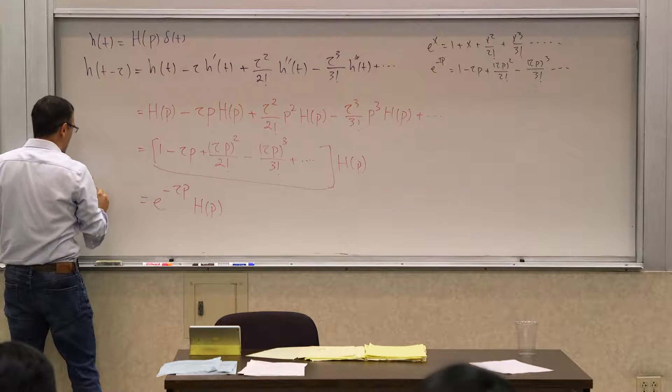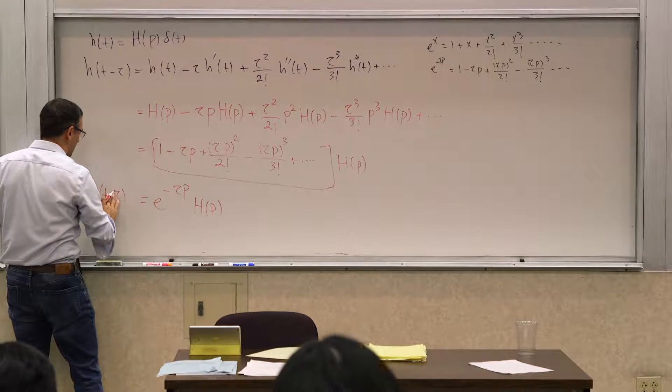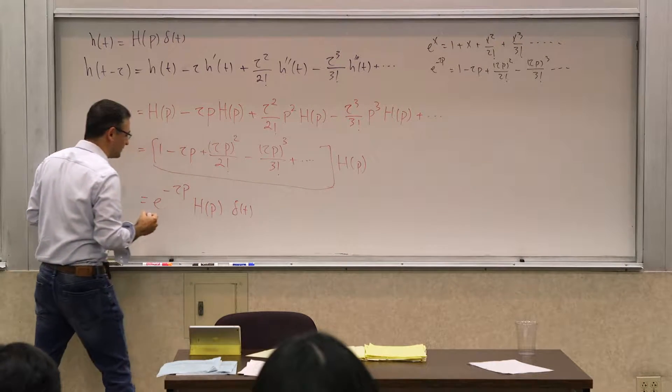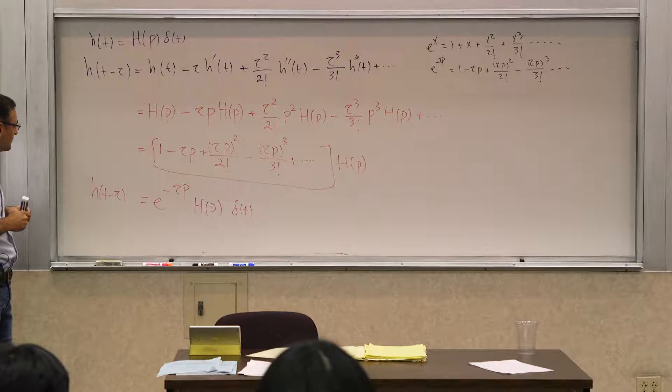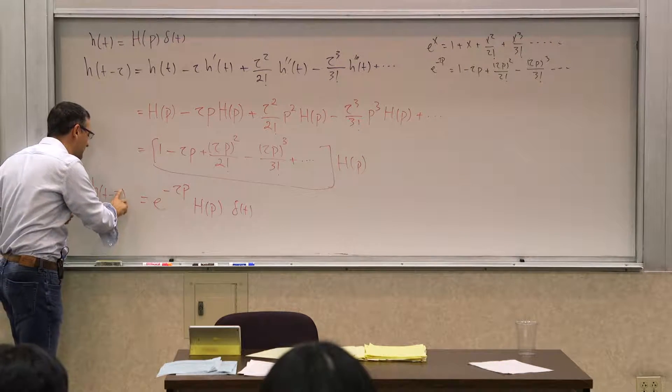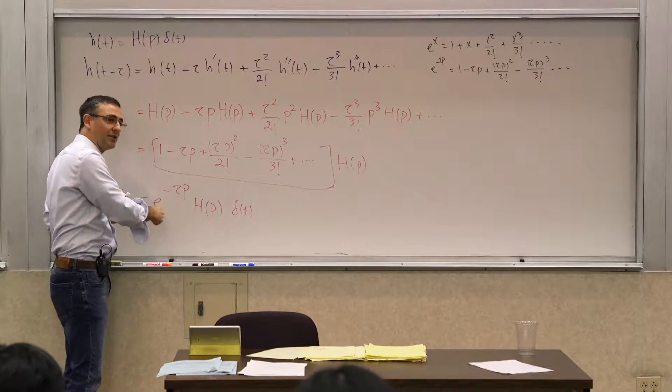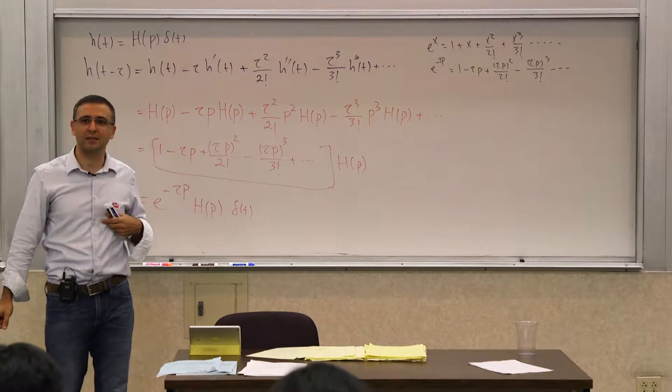So in other words, h of t minus tau is going to be this operating on the delta of t. So a time shift, a delay in time corresponds to an exponential, e to the negative tau p.